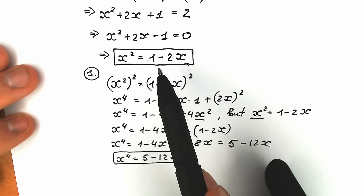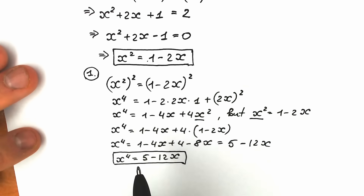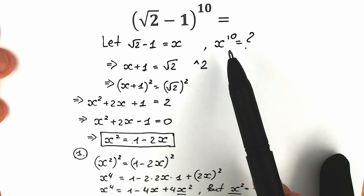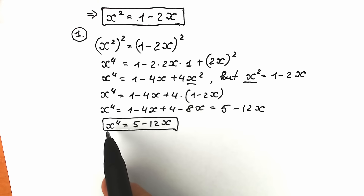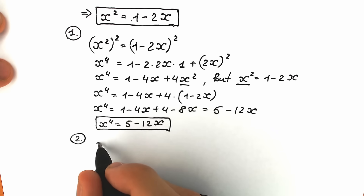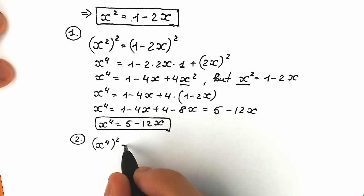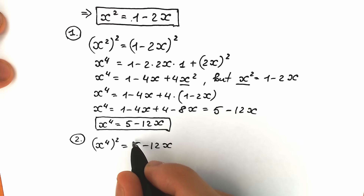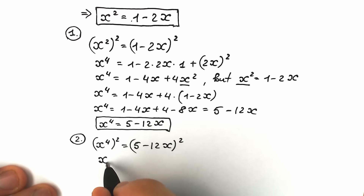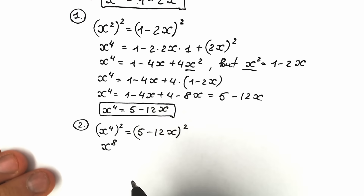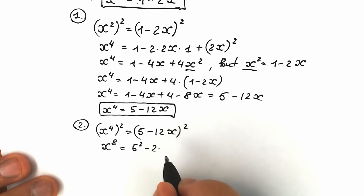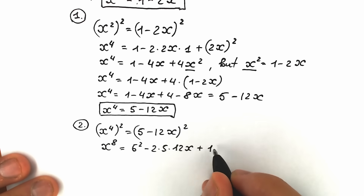Now we know x squared equals 1 minus 2x, and x to the fourth power equals 5 minus 12x. Let's get closer to x to the tenth power by raising both sides of x to the fourth power to the second power, giving us x to the eighth power. So x to the eighth power equals (5 minus 12x) squared, which expands to 25 minus 2 times 5 times 12x plus 144x squared, giving us 25 minus 120x plus 144x squared.